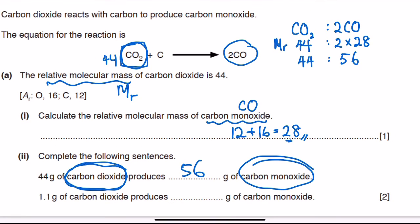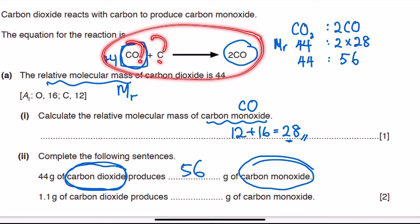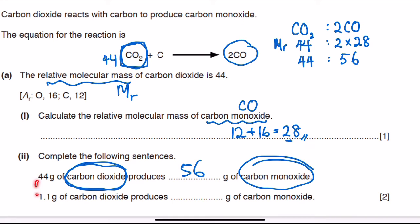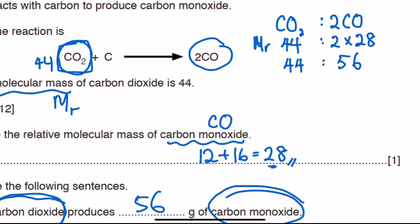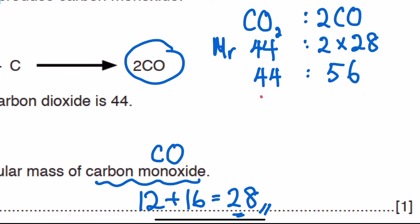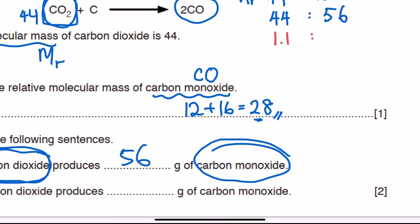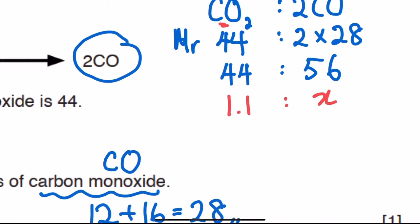Lastly, the sentence says 1.1 grams of carbon dioxide produces blank grams of carbon monoxide. You can't see 1.1 directly in the equation — it is a fraction of the carbon dioxide mass. Place 1.1 in the column under carbon dioxide. The corresponding mass for carbon monoxide is unknown, so call it x.